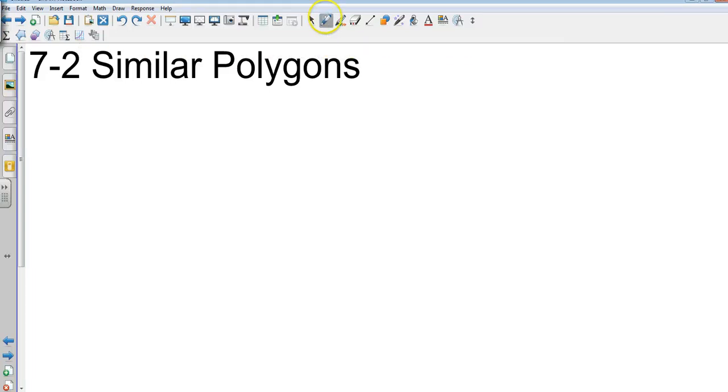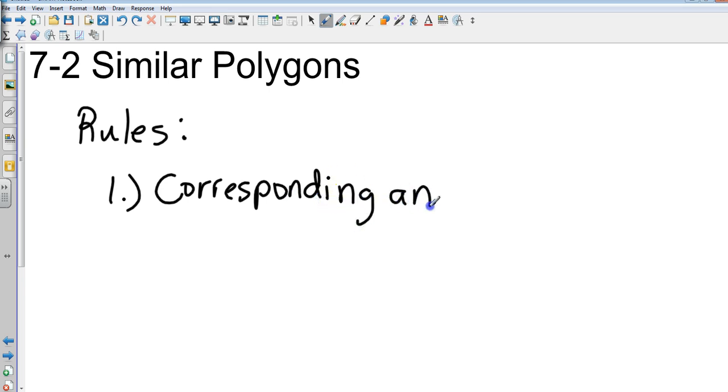Okay, geometry 7-2, similar polygons. There's two rules for similarity. Rule number one: corresponding angles must be congruent.